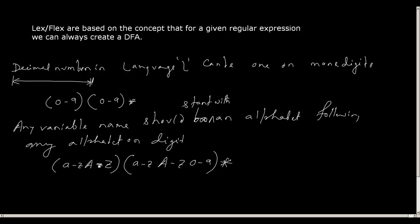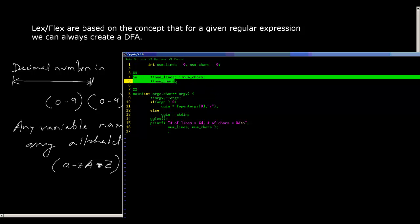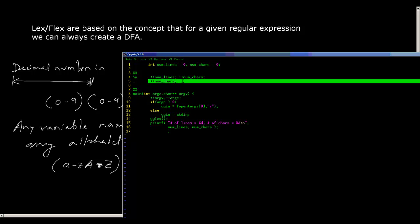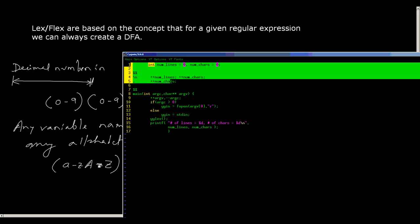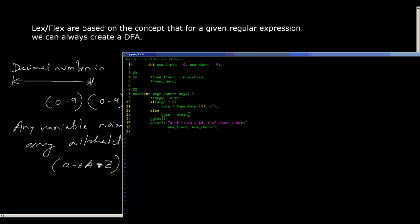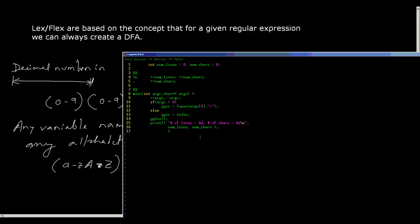This small lex program is to count the number of lines and number of characters. When we encounter a backslash-n, the action is to increment the line counter. The dot represents any other pattern — any other character found — and for that we just increment the character counter. In this way we provide pattern information in the form of a lex file.